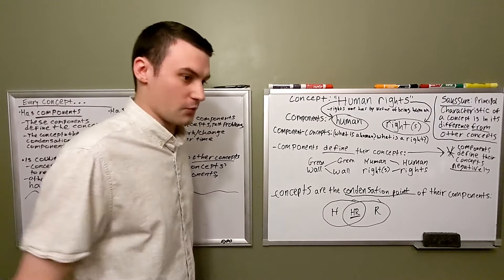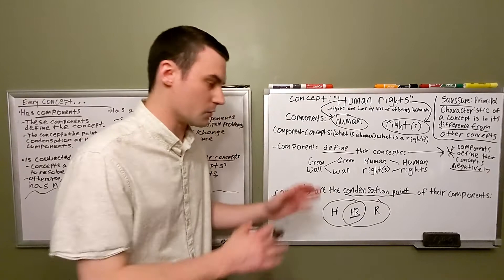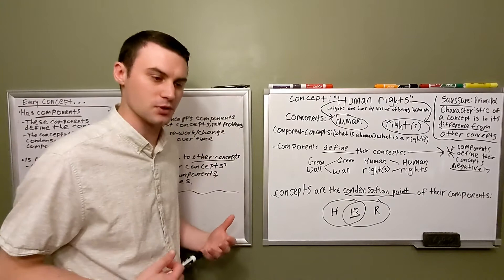I think that's true of both human and right. We can say, what is a human? What does it mean to be human? What is a right? What does it mean to have a right versus, say, a privilege? We'll return to this example as we work our way through the other main attributes of concepts in this part of the chapter. But for now, I want to turn our attention to some other things that Deleuze and Guattari say about components.